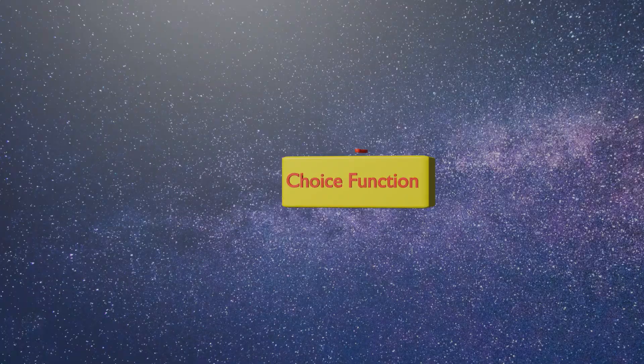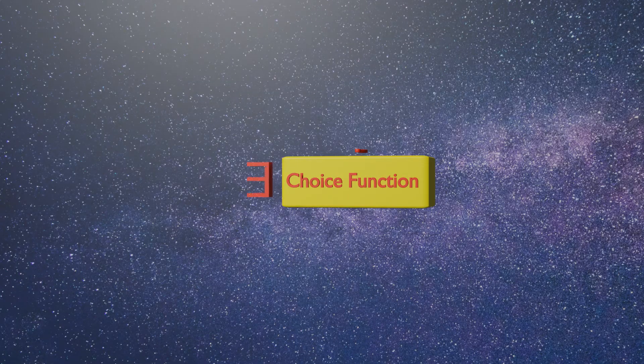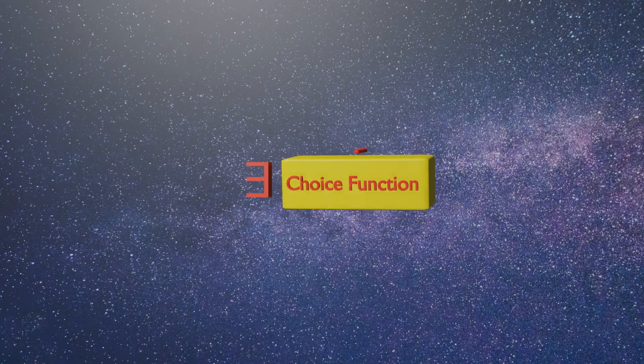But the axiom of choice gives us such a function. However, it only says that it exists. It doesn't define it or describe it. We don't know what such function is. We only know that it exists.